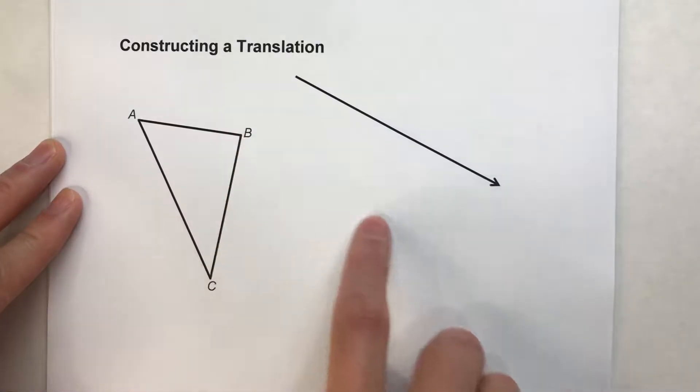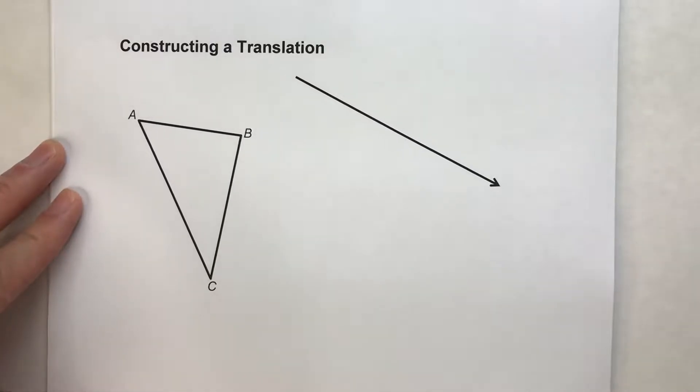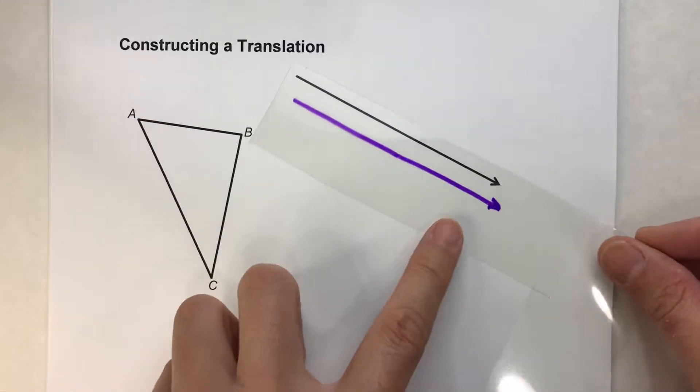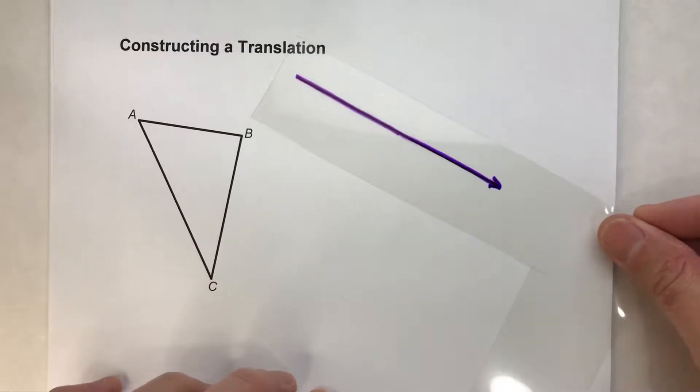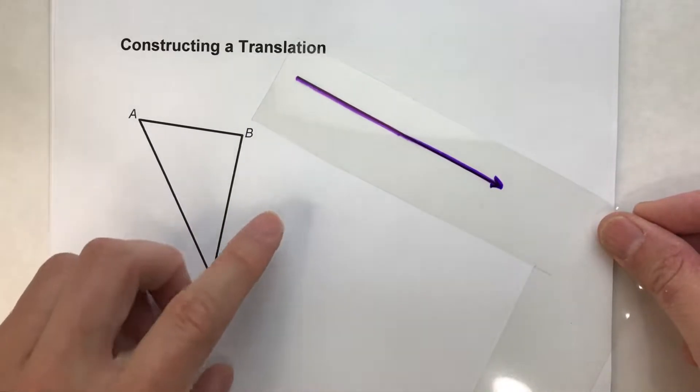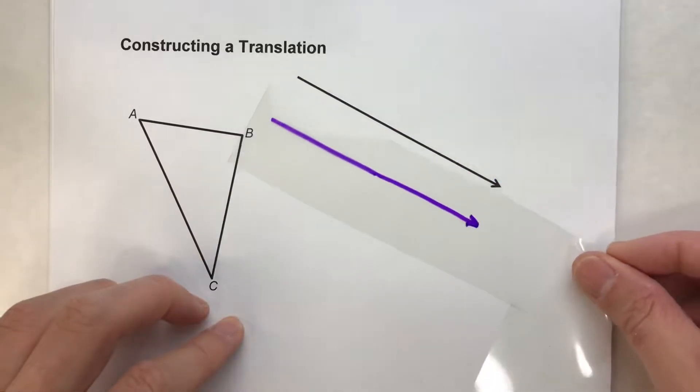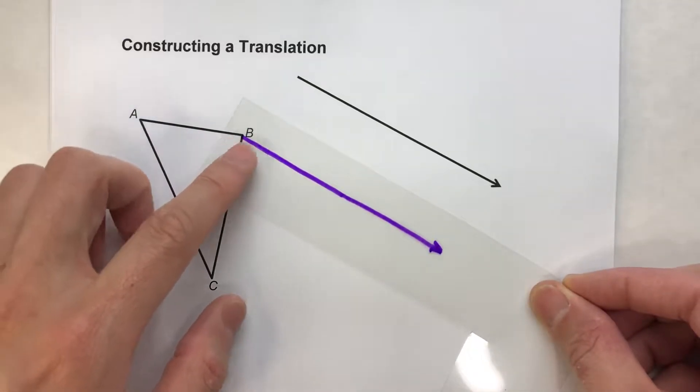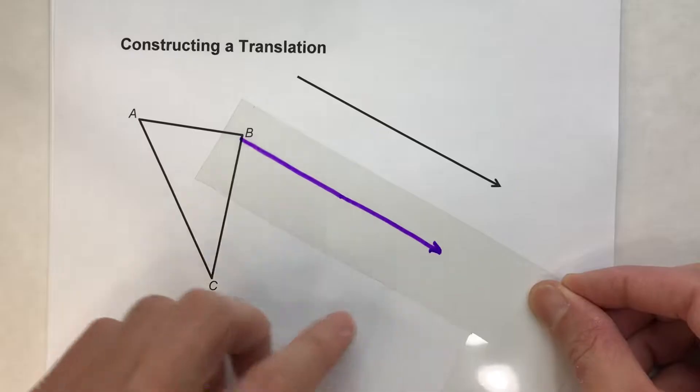So the direction of this arrow is how far we're going to slide, or what direction we're going to slide the figure. So it might be helpful to have this little transparency here. So here's my vector. So our strategy here is we're going to take this vector and put it on the end of each vertex of that triangle, and that'll tell us where that new point's going to be.